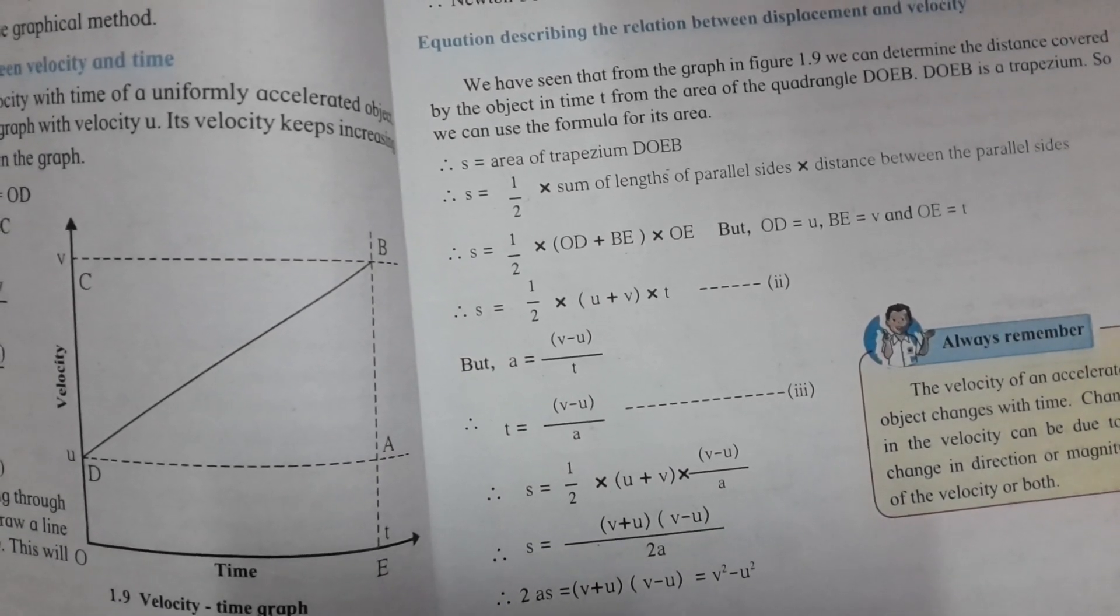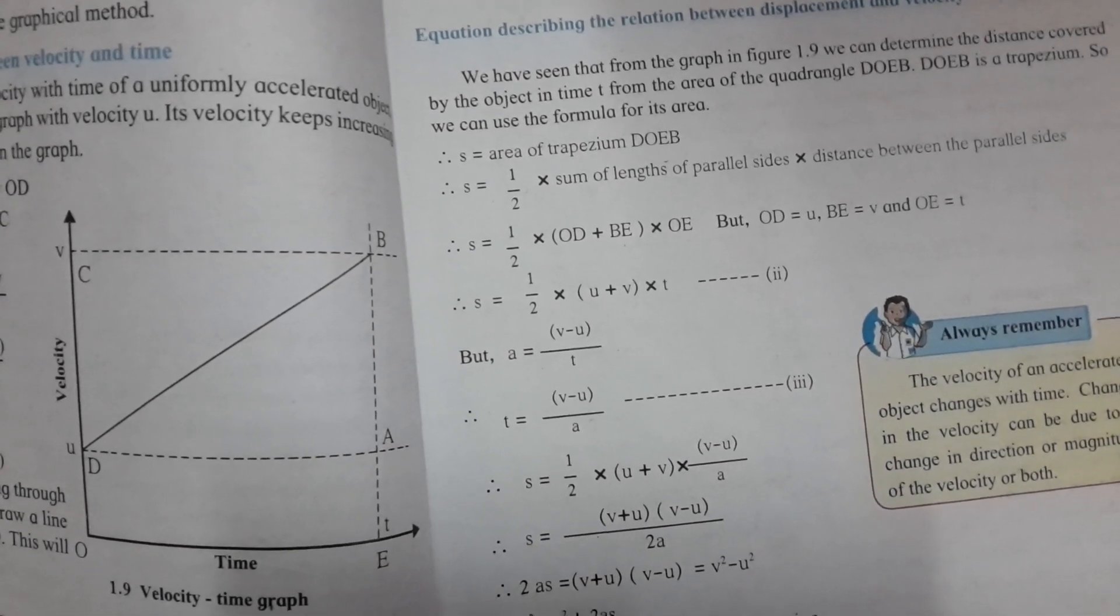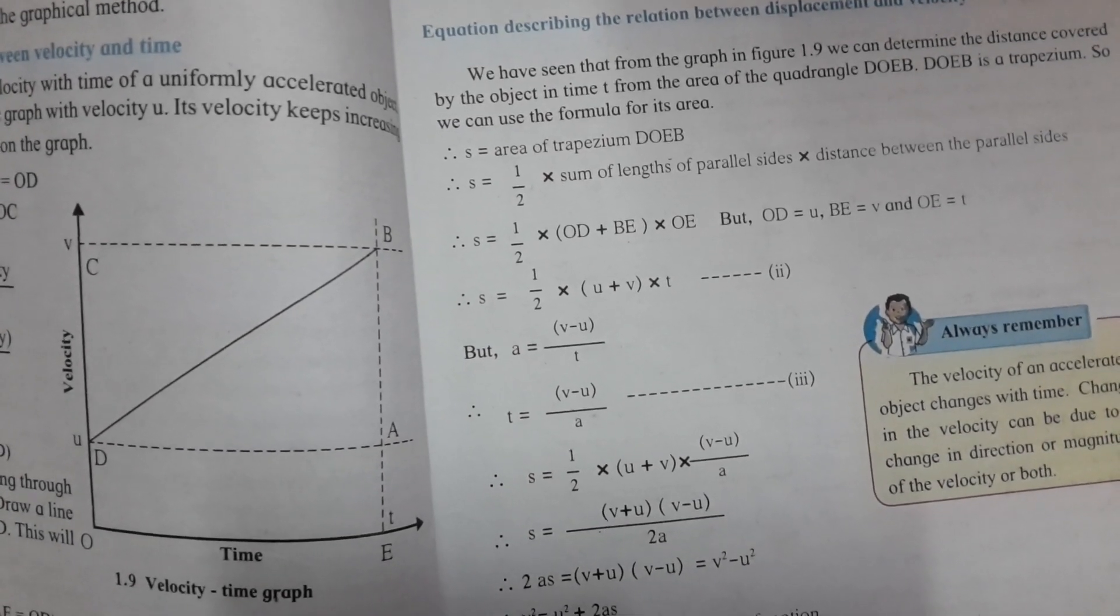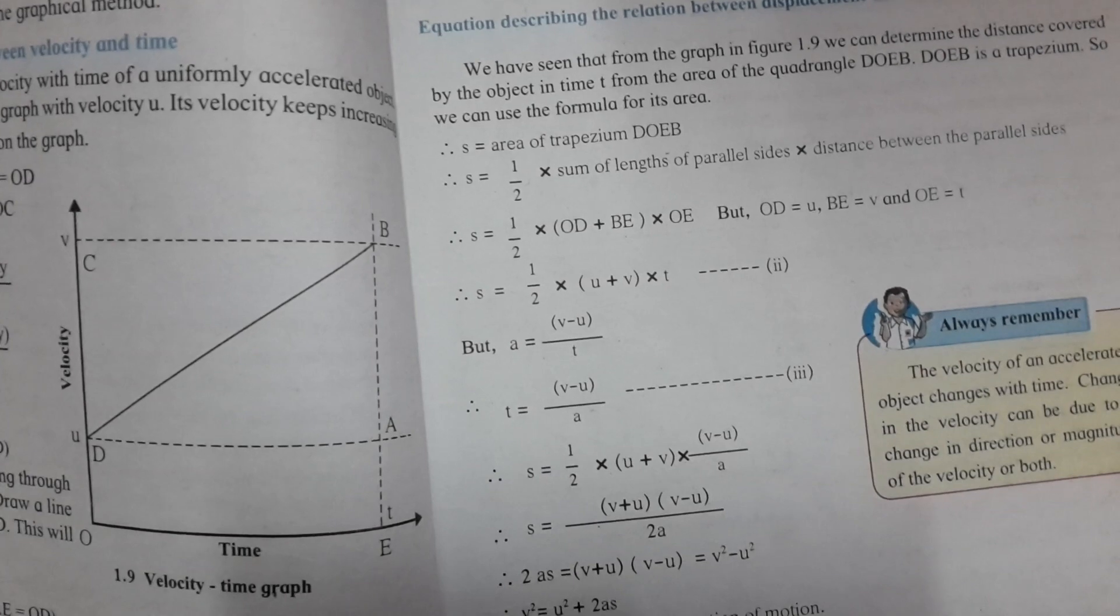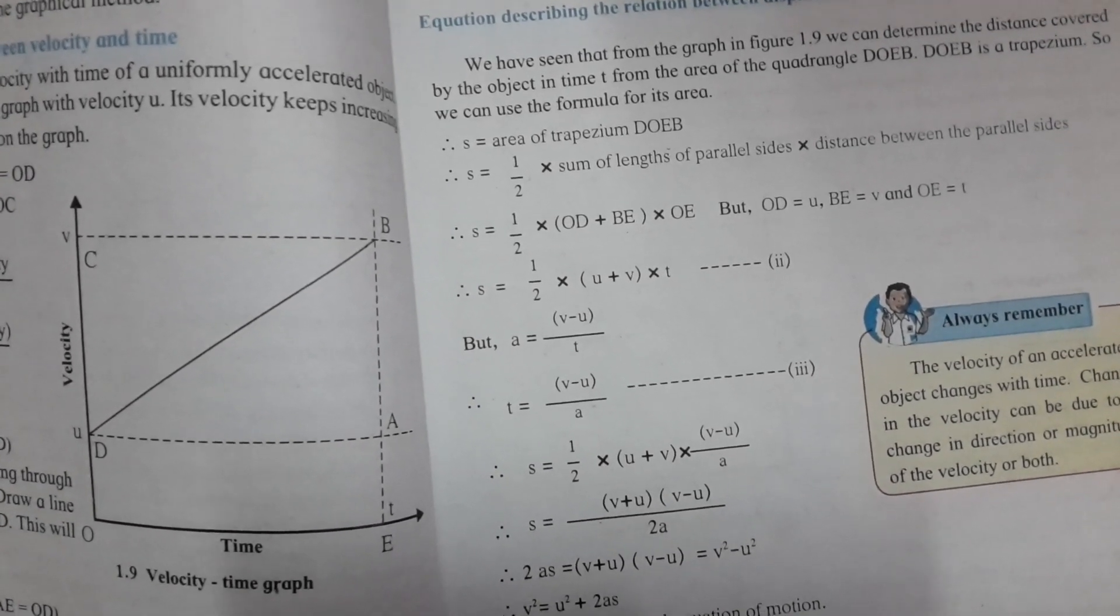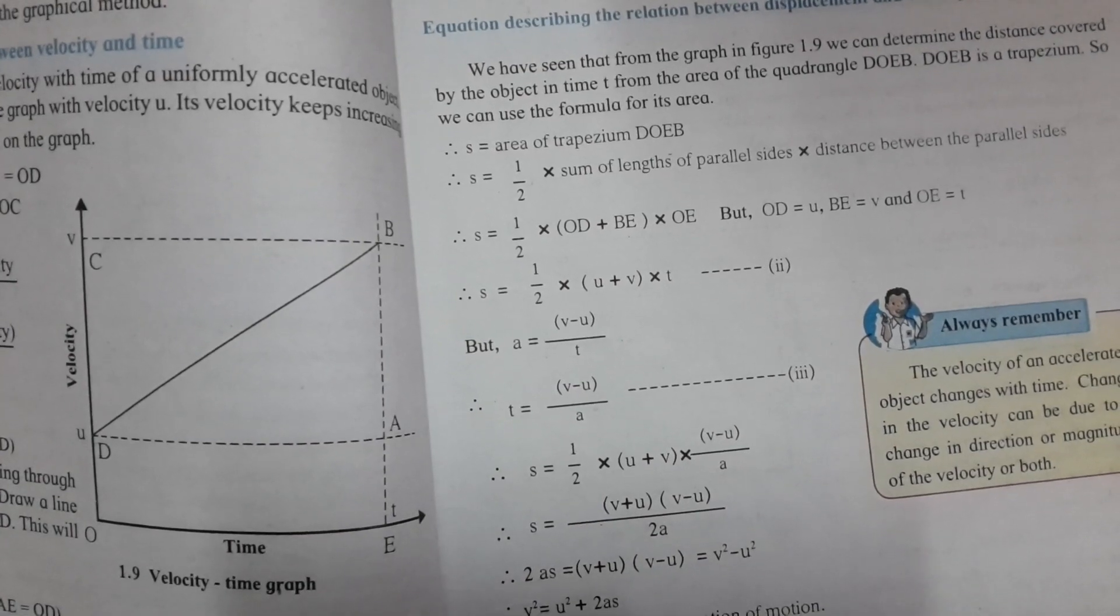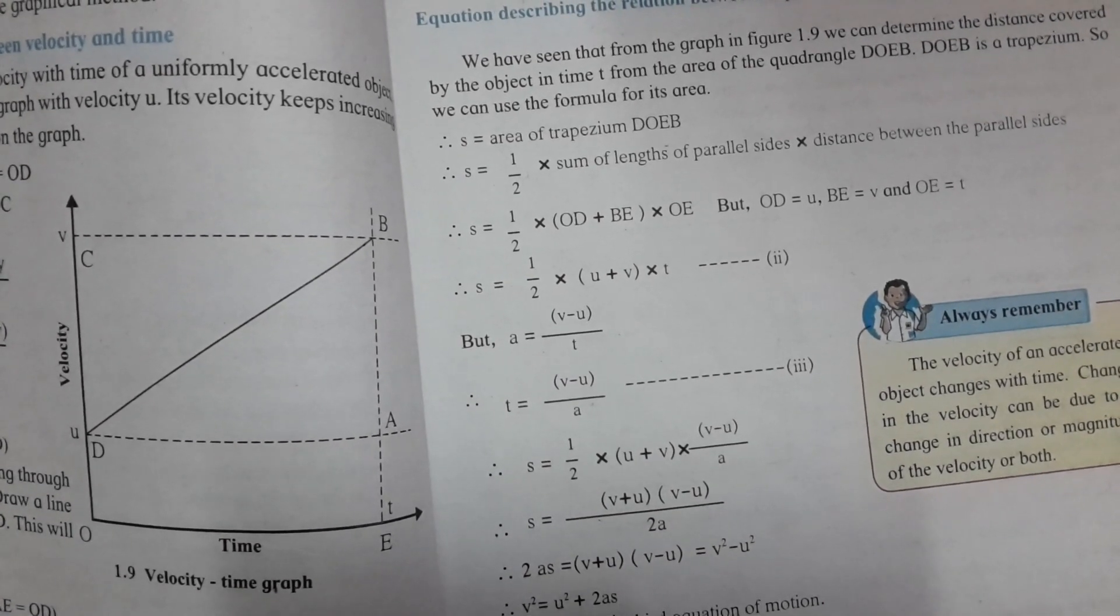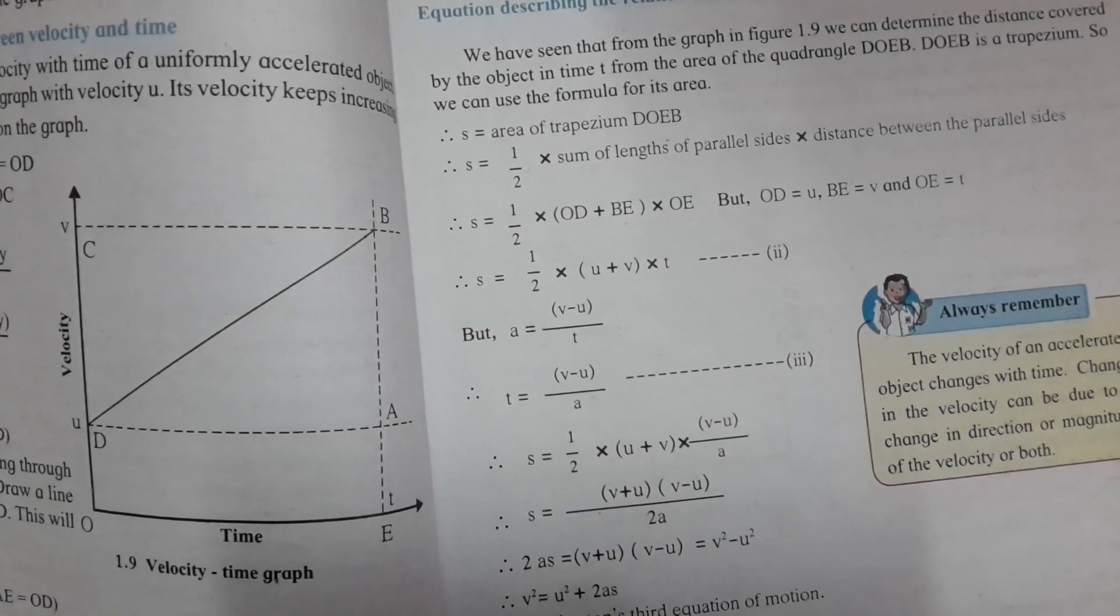S equals area of trapezium DOEB. S equals half times (U plus V) times T.